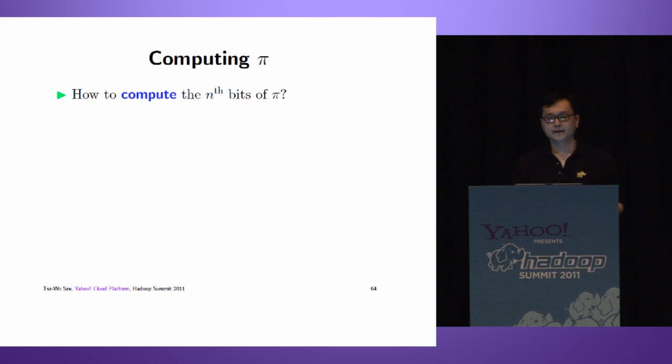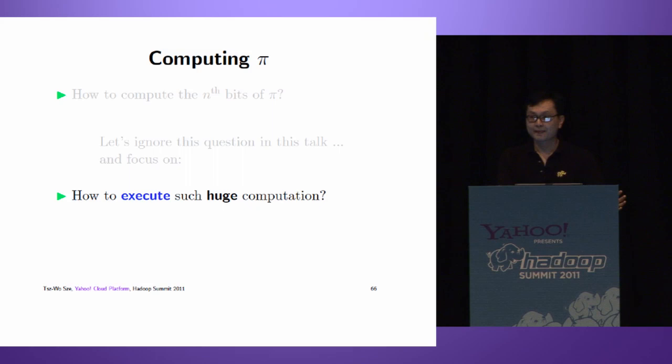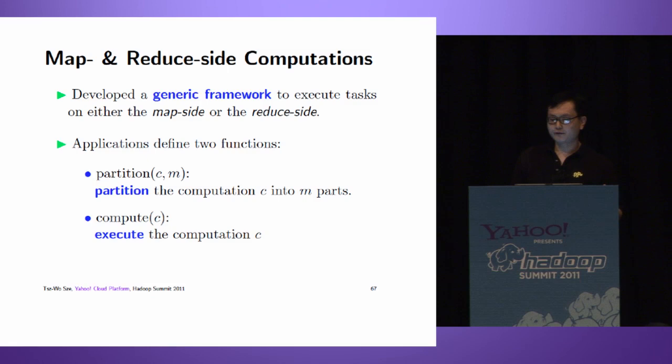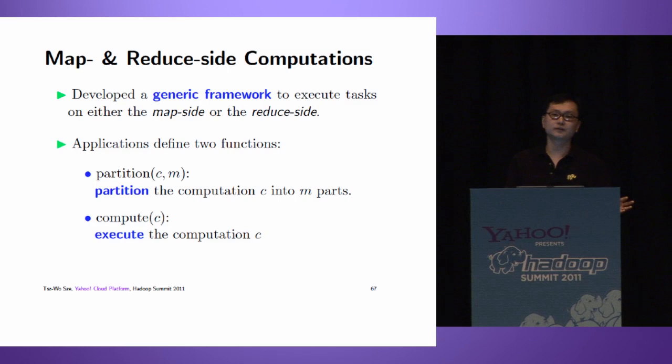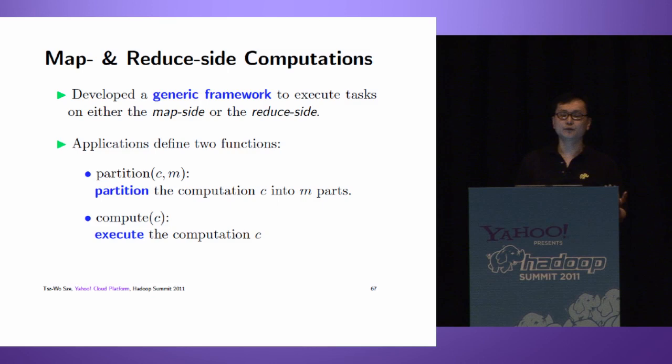How to compute the nth bits of Pi? I don't have time to go through this in this talk. Let's ignore this question for the moment and focus on how to execute such huge computation. To execute this work, we developed a generic framework to execute tasks on either the map side or reduce side. This framework is generic, so any application can use it. Applications only have to define two functions: partition (given computation C and integer M, partition the computation into M parts) and compute (how to execute your computation).